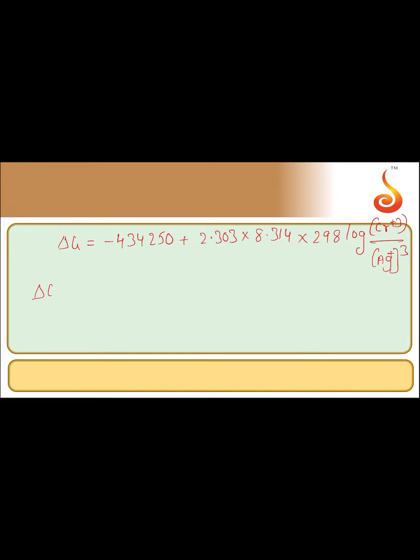Delta G is equal to minus 434,250 plus 2.303 into 8.314 into 298 will get 5705.848 log Cr plus 3 is 0.1 molar, even Ag plus is also 0.1 molar whole cube. So minus 434,250 plus 5705.848.